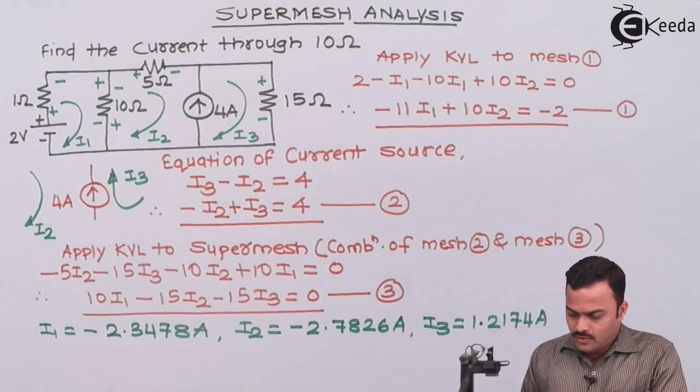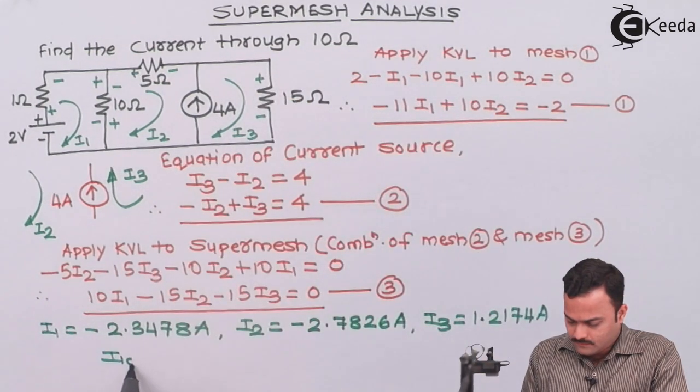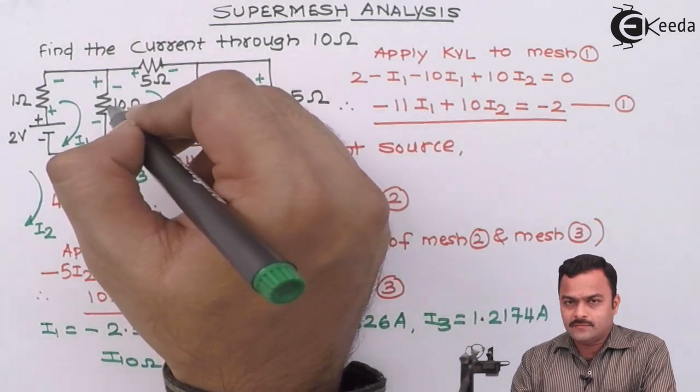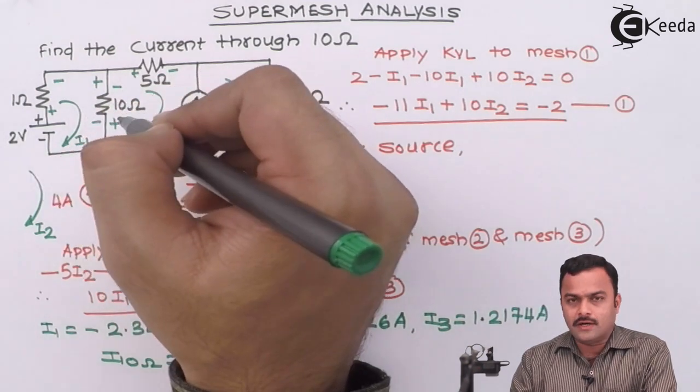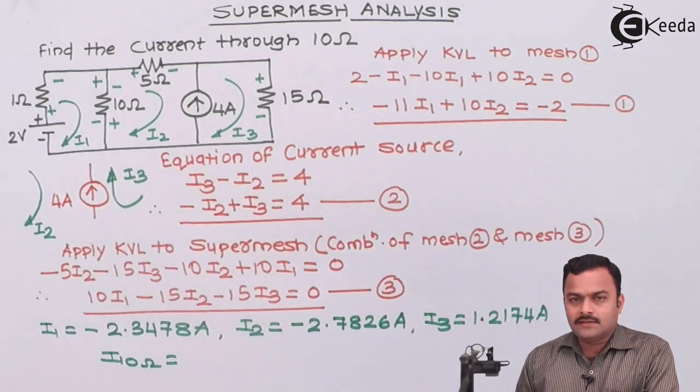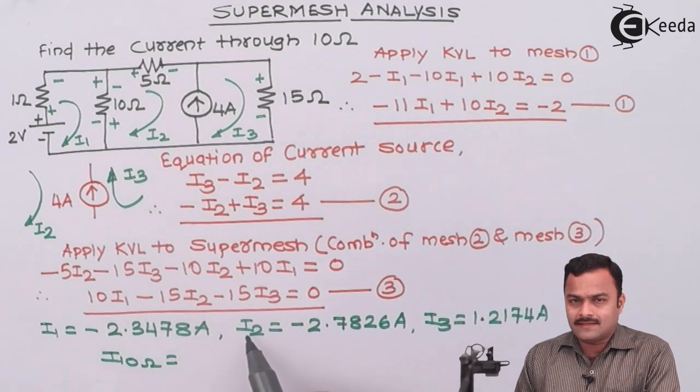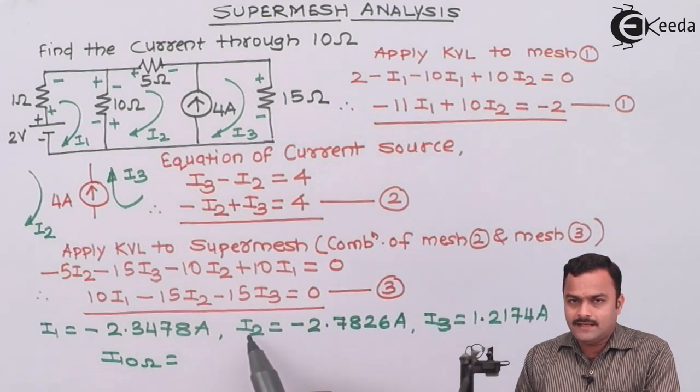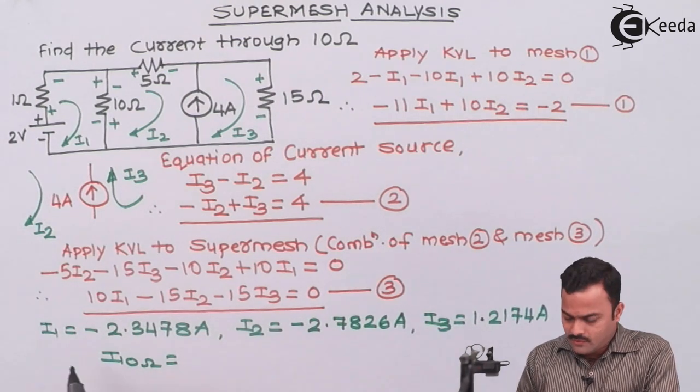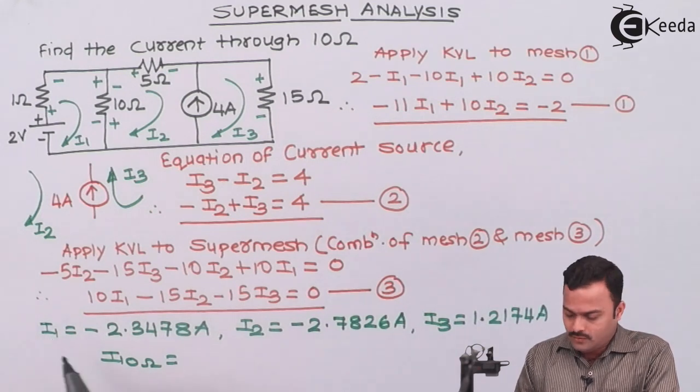So what we want? We want a current flowing through 10 ohm. So current flowing through 10 ohm is nothing but over here. There are two currents as far as mesh currents are concerned I1 and I2 and both are flowing in opposite direction. So there has to be subtraction. But by checking which one is more we will take that current as a first and minus another current.